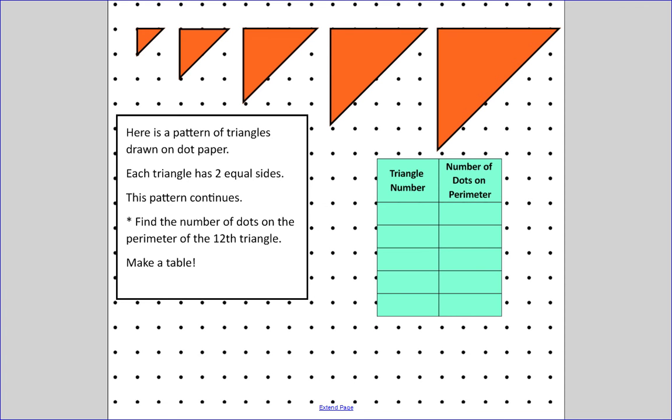Each triangle has two equal sides - this side and this side are the exact same length. This pattern is going to continue, and ultimately we want to know what the pattern is on the 12th triangle. To start this off, we need to make a table.